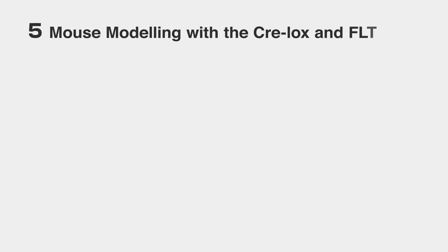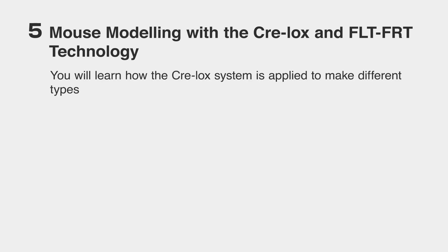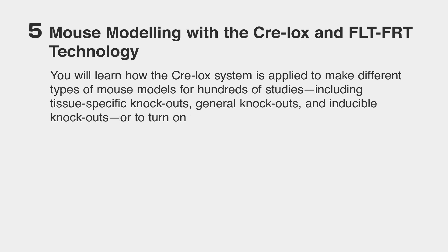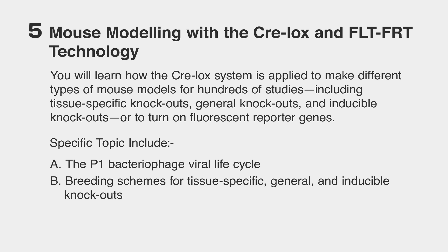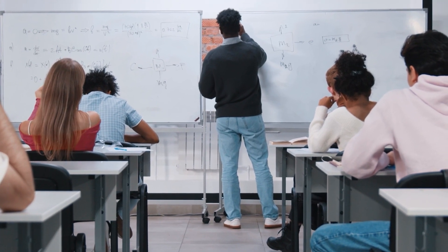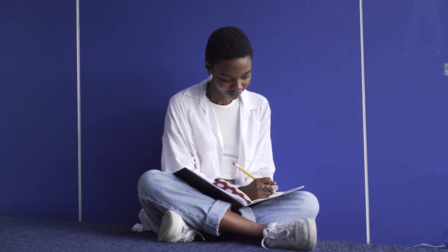Number five is one of our favorite courses, and it involves learning about mouse modeling with the Cre-Lox and FLP-FRT technology. The Cre-Lox system is applied to make different types of mouse models for hundreds of studies, including tissue-specific knockouts, general knockouts, and inducible knockouts, and to turn on fluorescent reporter genes. Other topics include the P1 bacteriophage viral life cycle, breeding schemes for tissue-specific, general, and inducible knockouts, and how to improve conditional knockout efficiency. This course will be very important for budding biomedical scientists, especially those just getting started with graduate school.